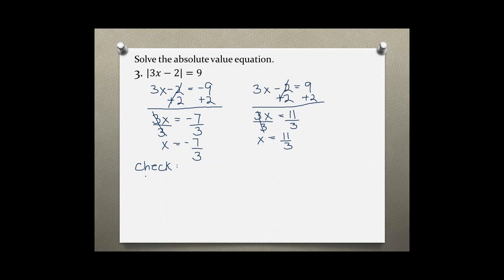To check if both solutions are valid, we plug them back into the original equation. For x = -7/3, we have 3 times negative 7 over 3 minus 2 equals 9. Writing 3 as a fraction over 1 and cross-simplifying, the 3s cancel, leaving negative 7 minus 2, which equals negative 9 inside the absolute value bars. The absolute value of negative 9 is positive 9, which equals 9, so that solution checks out.